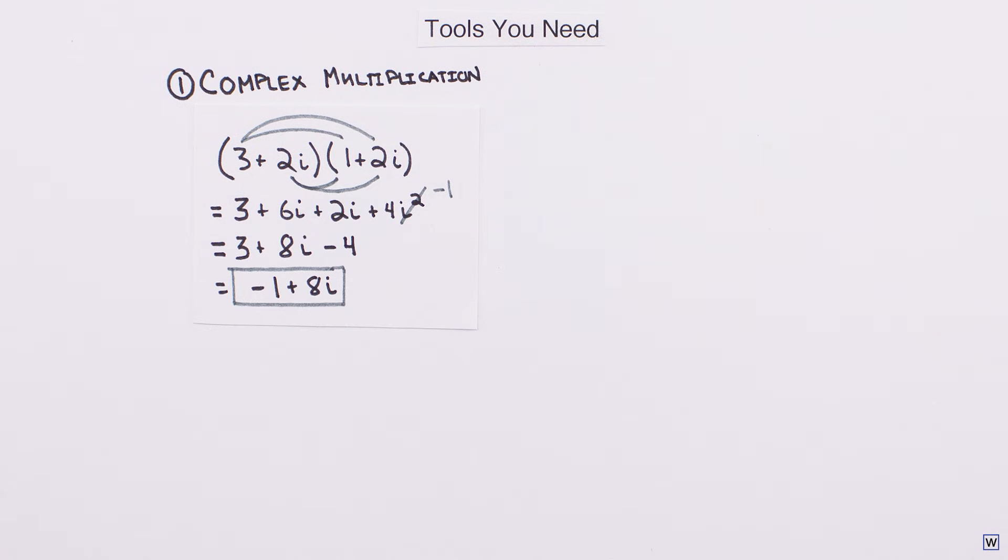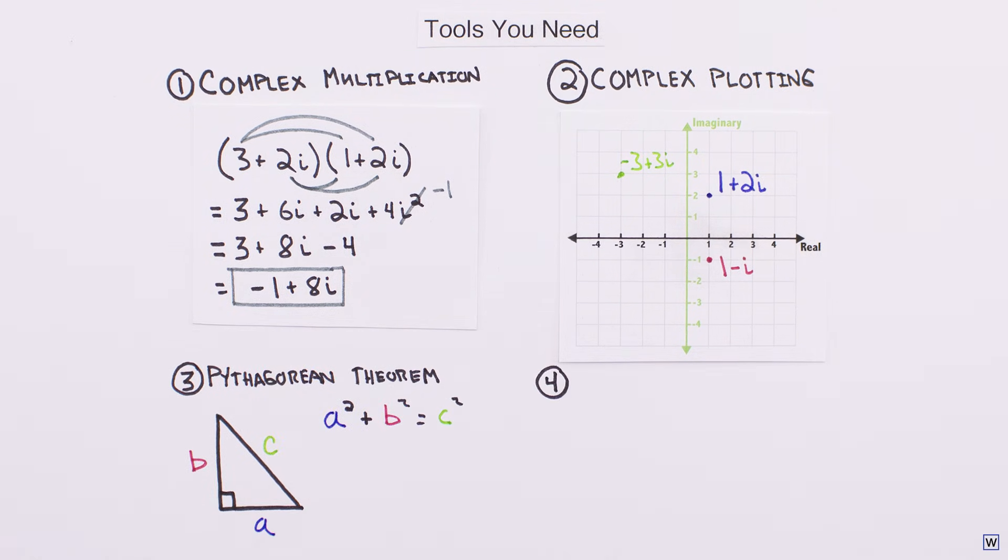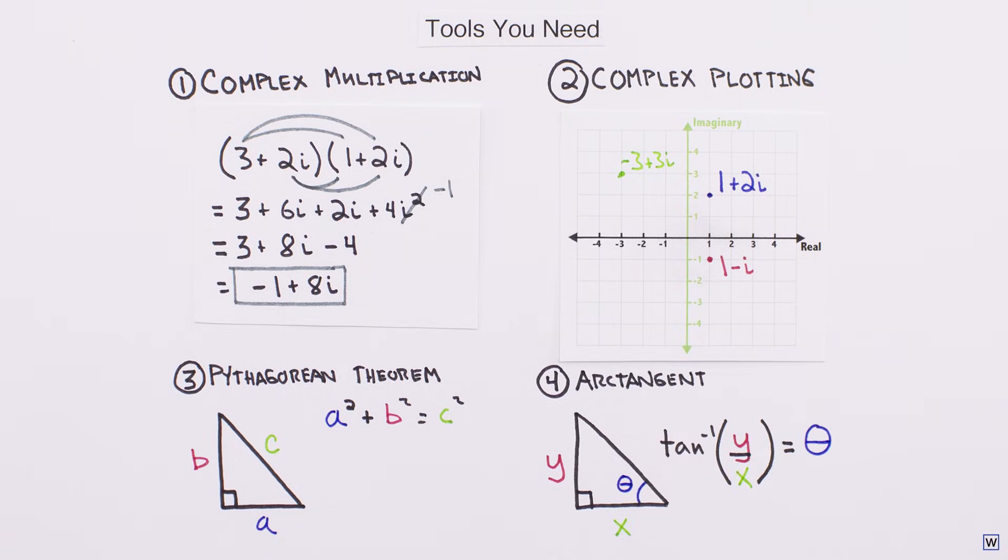To discover this deeper meaning for yourself, all you need to know is the following: how to multiply complex numbers algebraically as we just did, how to plot numbers on the complex plane, the Pythagorean theorem, and finally, how to use arctangent to find angles.